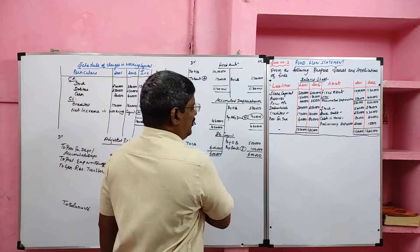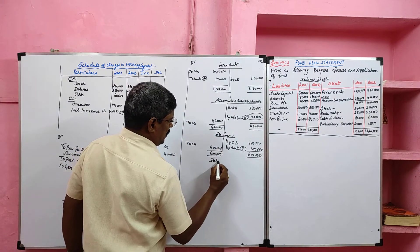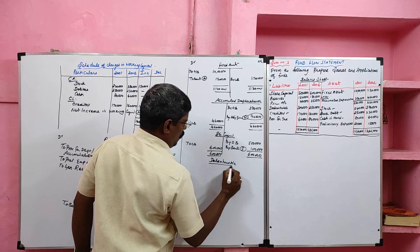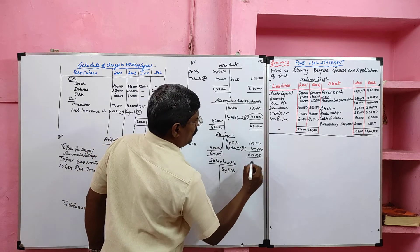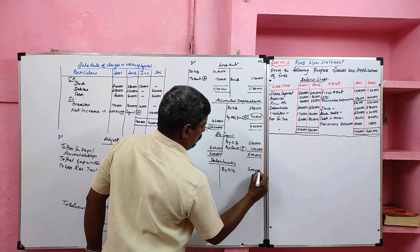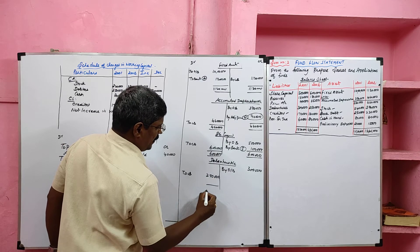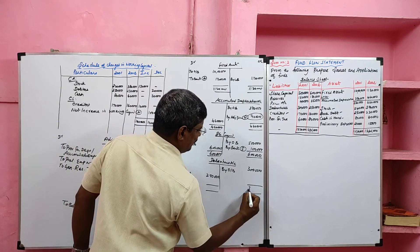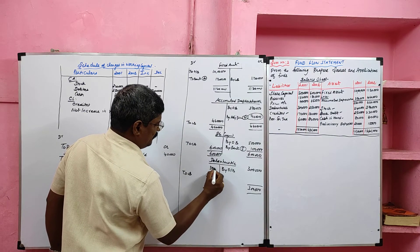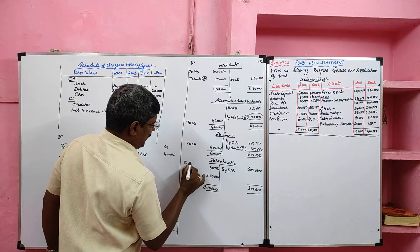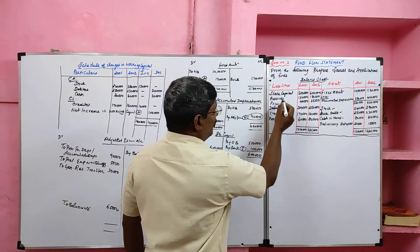Profit and loss account is already considered. Now we prepare the ledger account for debentures. Debentures is a liability, so the opening balance is credited. Opening balance is 3 lakh and closing balance is 2 lakh 50,000. Debentures decreased, which we assume as redemption of debentures. This goes to the application side as redemption of debentures to bank.